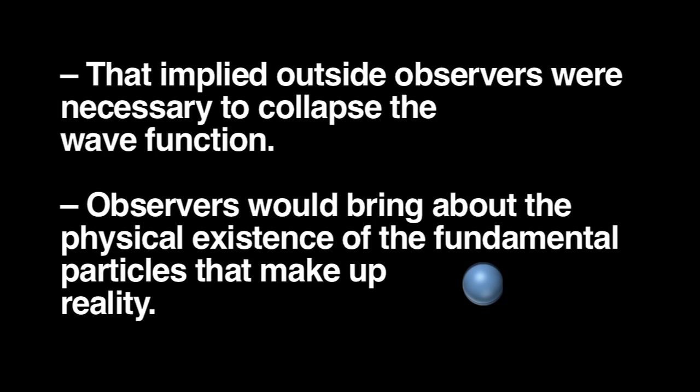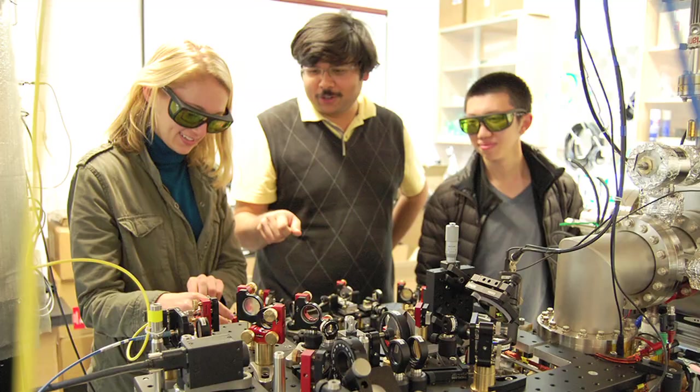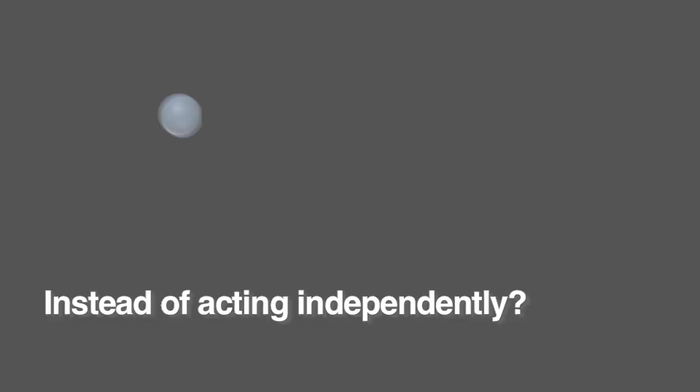But that implied outside observers were necessary to collapse the wave function and bring about the physical existence of the fundamental particles that make up reality, which many scientists philosophically could not accept. How could outside observers be responsible for the actual result and the collapse of the particle instead of us simply observing nature to see how it behaves on its own? How could the most fundamental particles of nature be dependent on our observations instead of just acting independently?